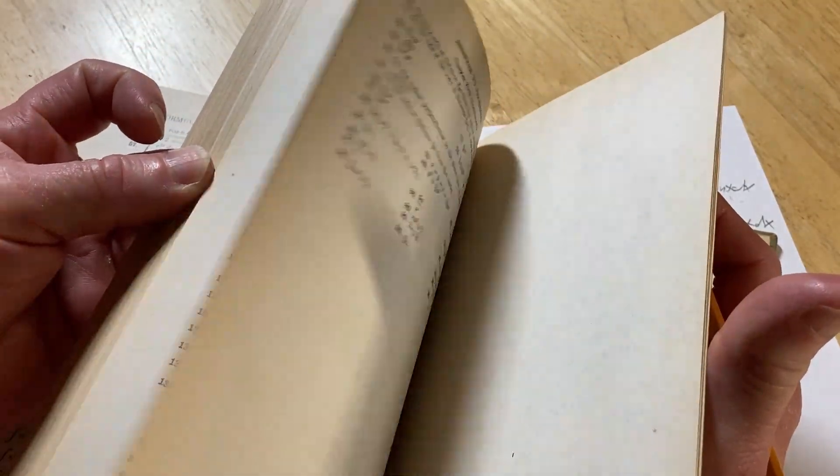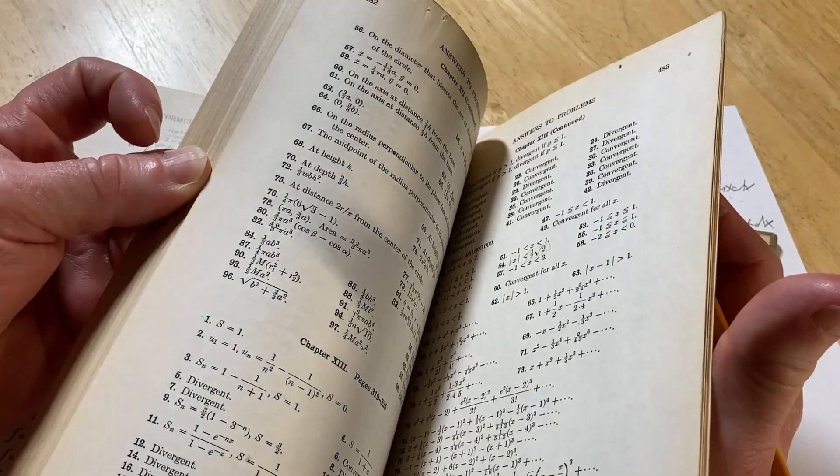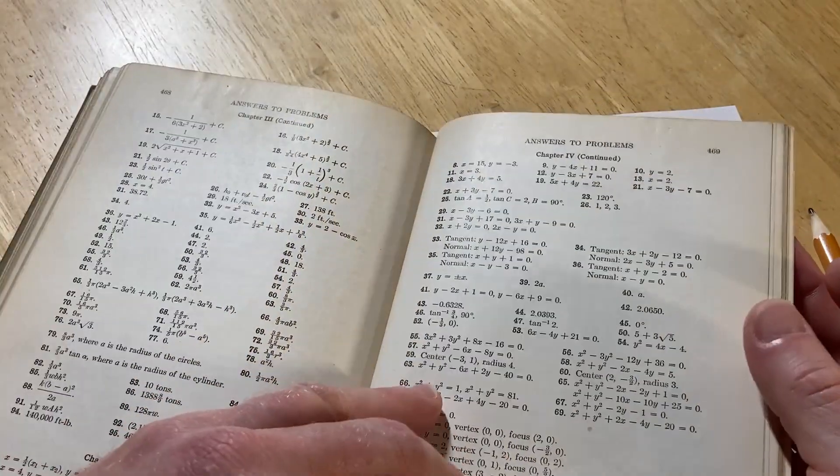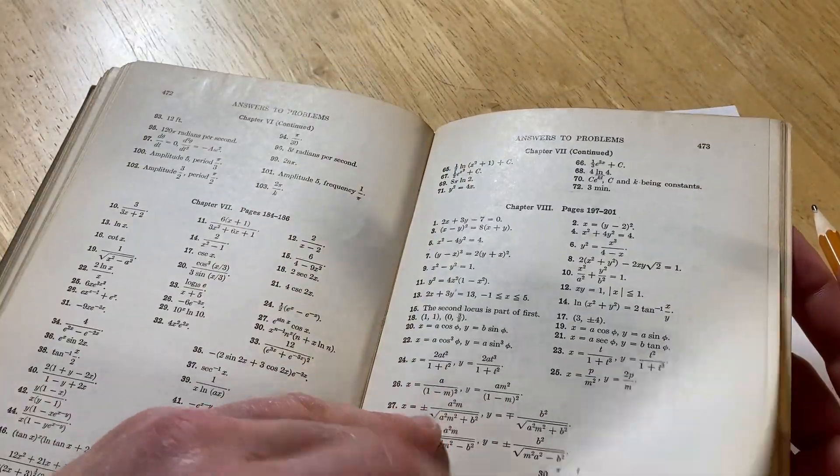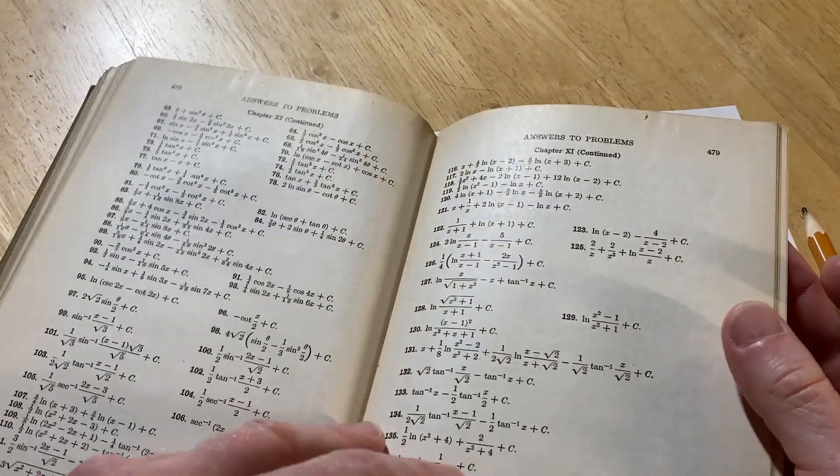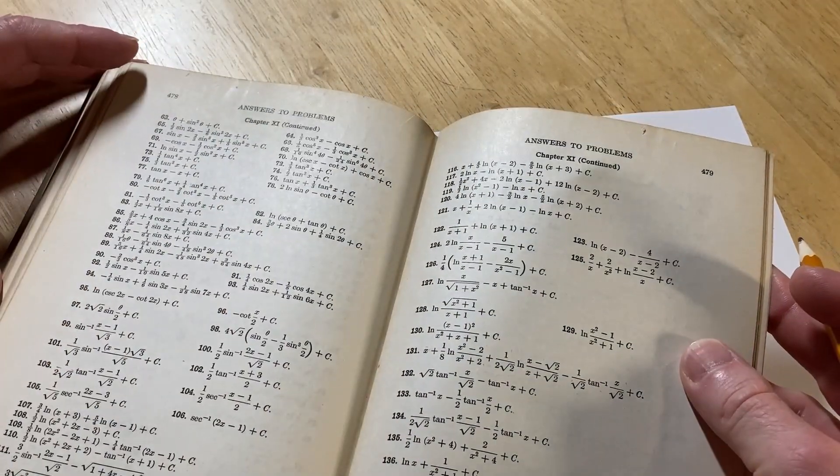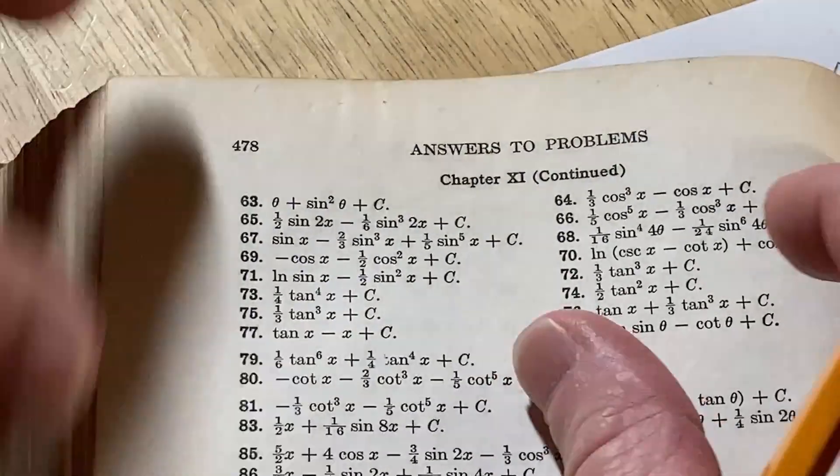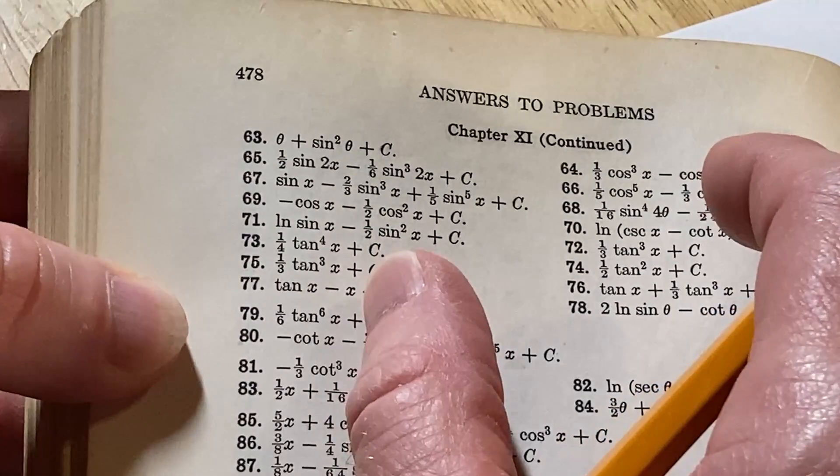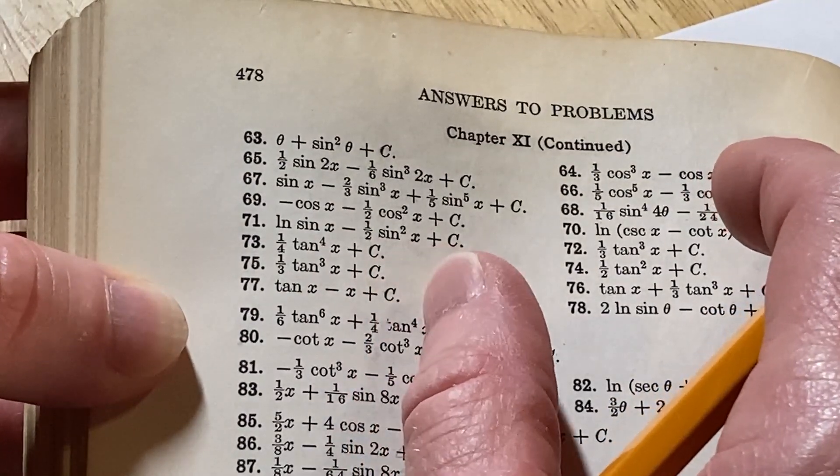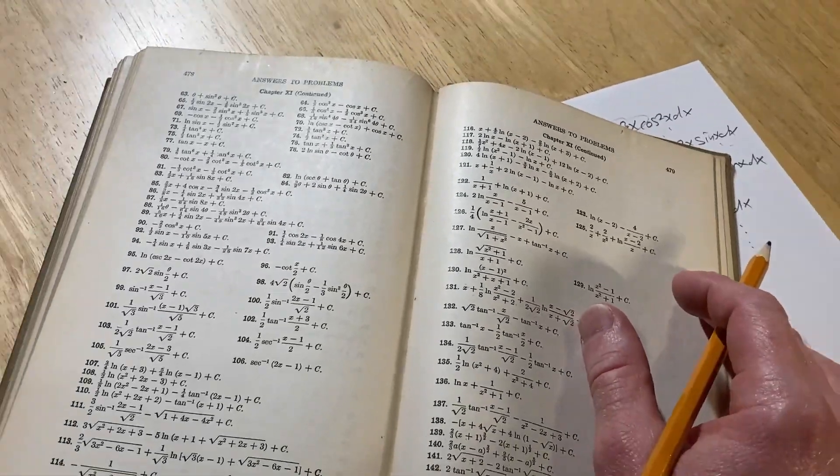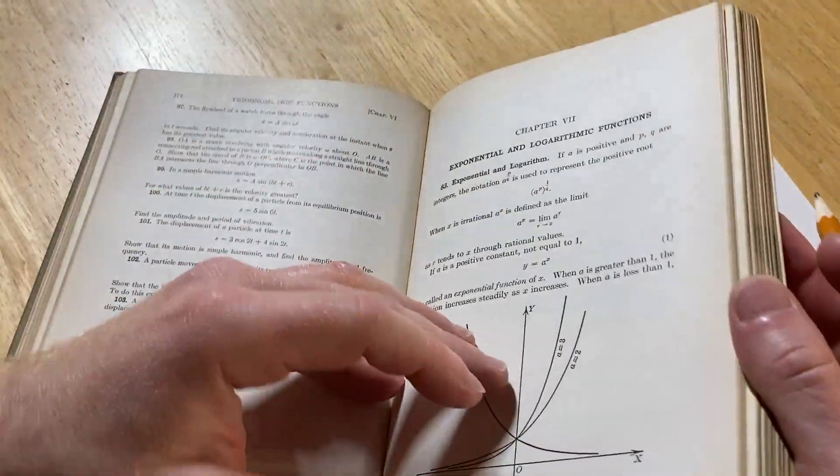And I believe it was 71. Yeah, here it is. Here's the answer. They just didn't put the absolute value. There it is: ln sine x minus one half sine squared x plus c. So really cool, right? You've got all the answers to every single problem in this book. I think that's pretty cool. Awesome book.